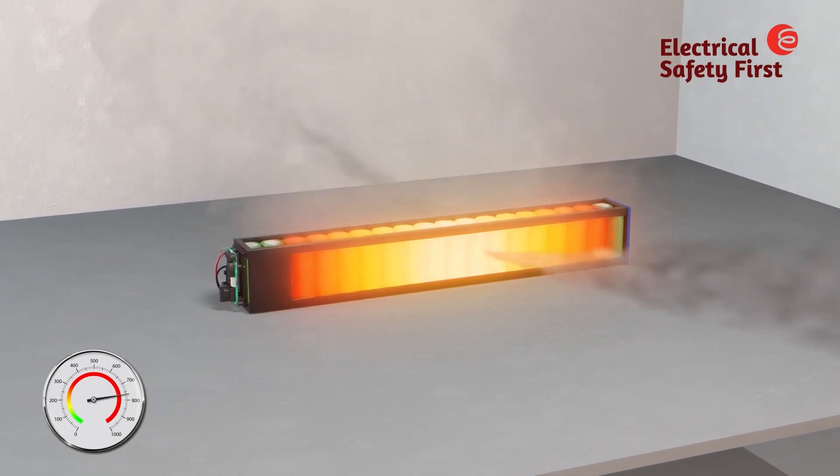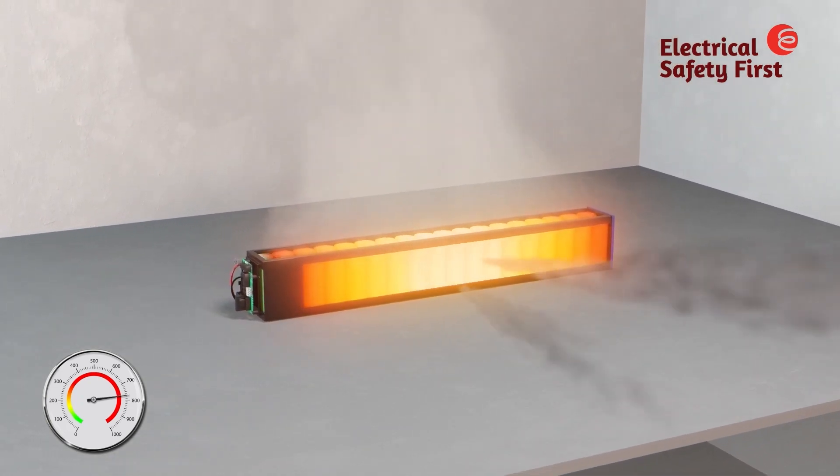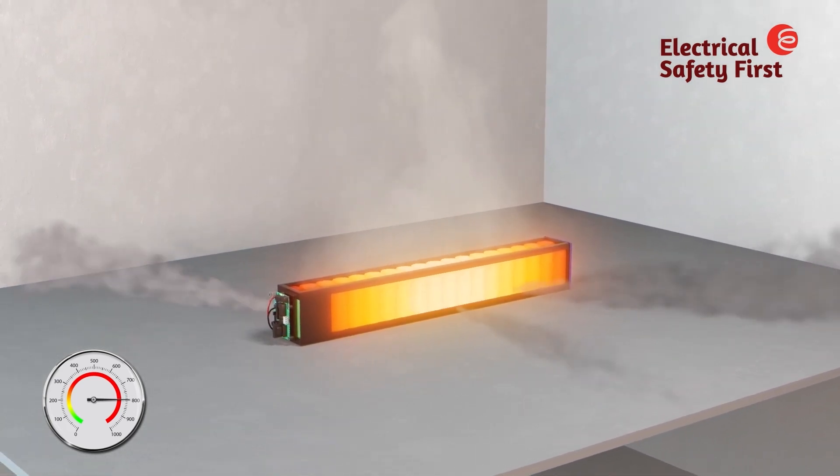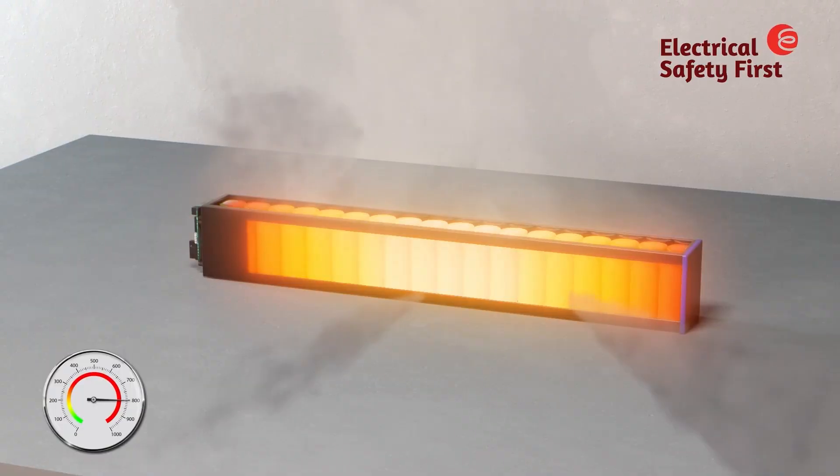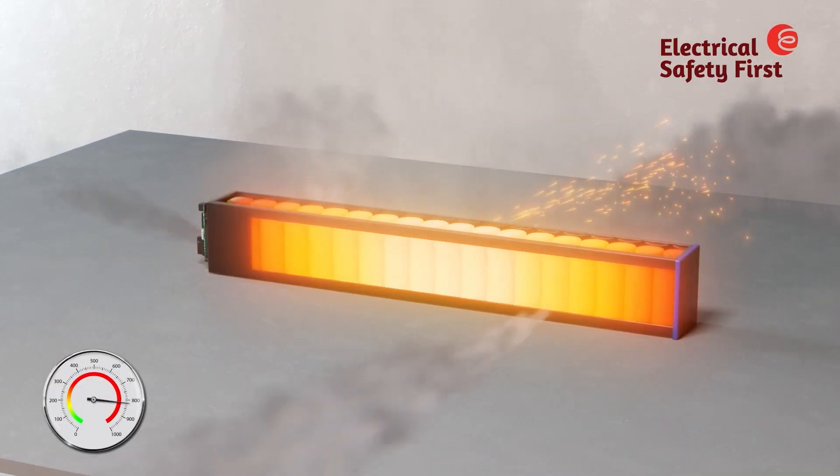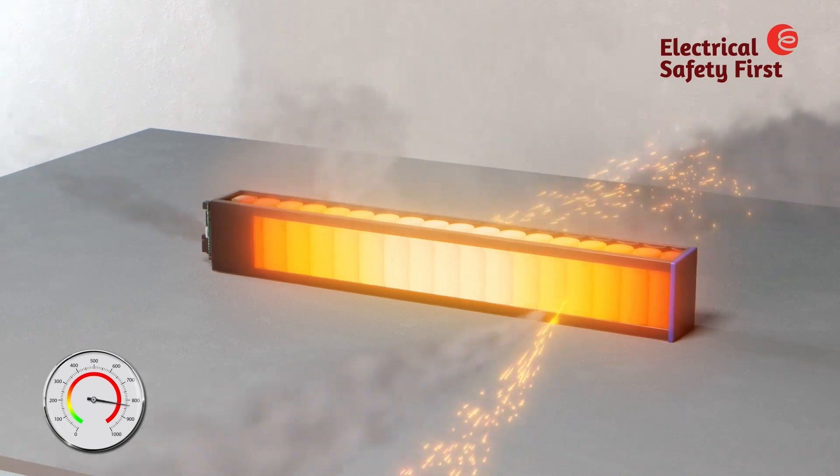Once this exothermic reaction gets hold, even removing external sources that may have caused it will not prevent thermal runaway and a battery fire or explosion. The temperature of the cell accelerates uncontrollably and can reach temperatures in excess of 700 degrees Celsius.